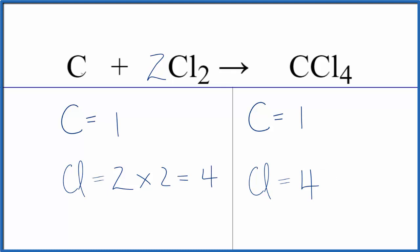If we were asked to report the coefficients, we could say one, two, one. But we don't usually write the one. So this is the equation: carbon plus chlorine gas gives us CCl₄, carbon tetrachloride. This is Dr. B, and thanks for watching.